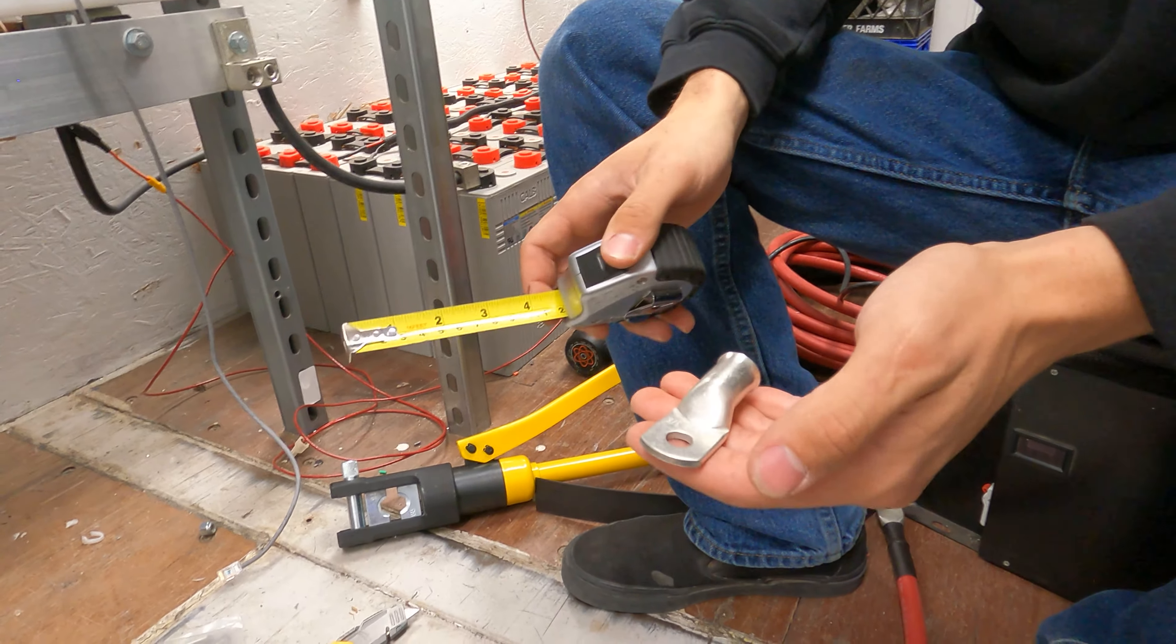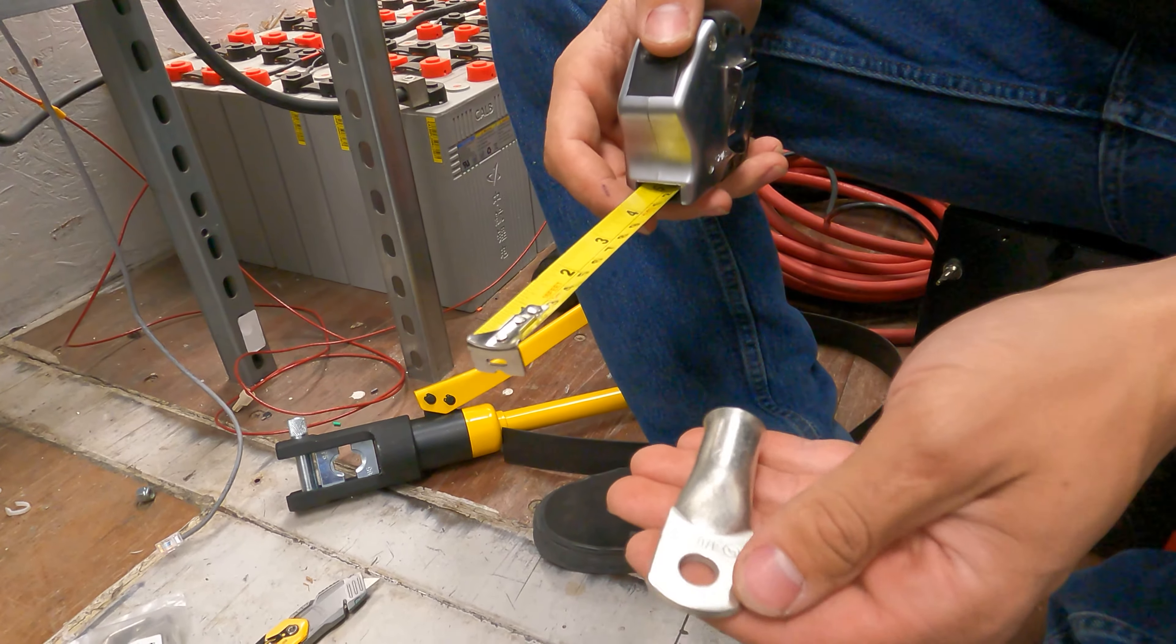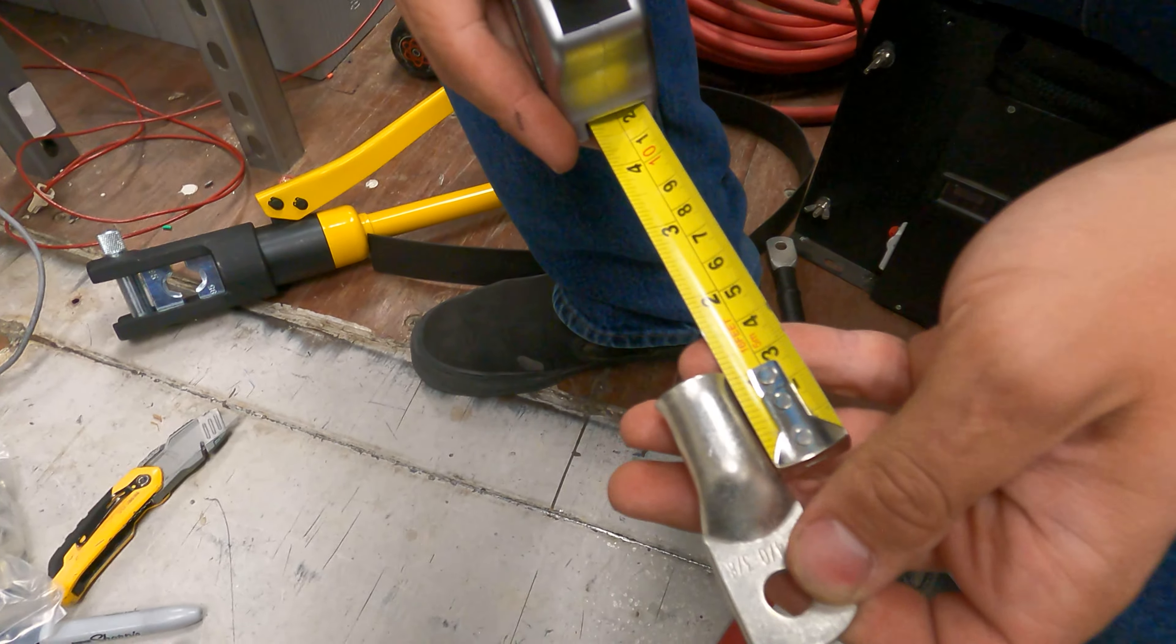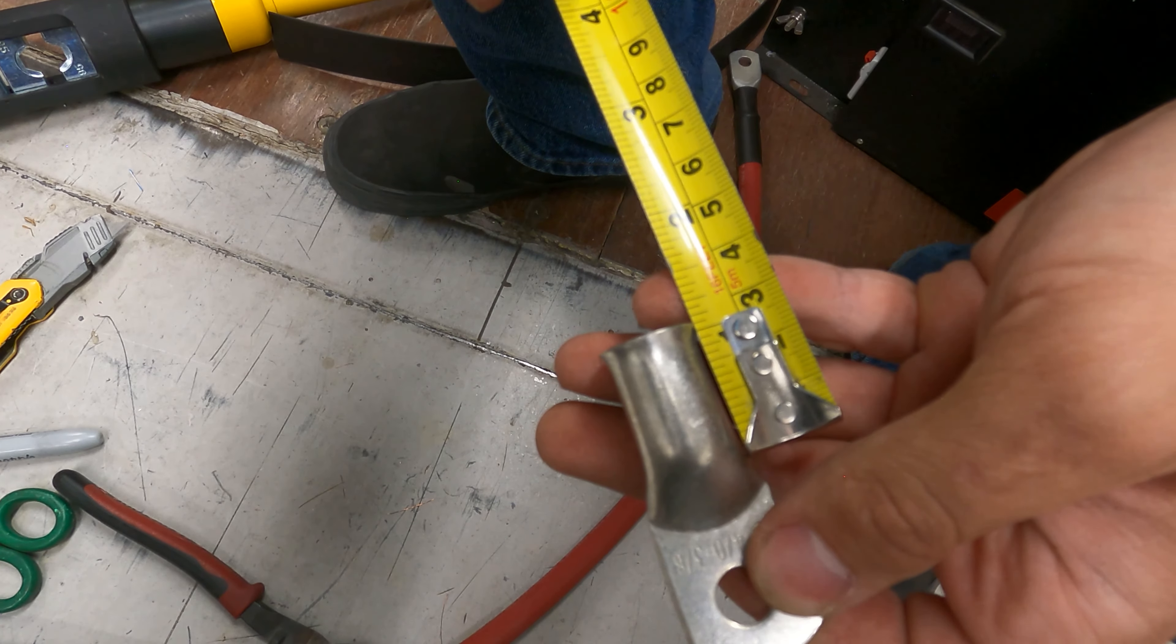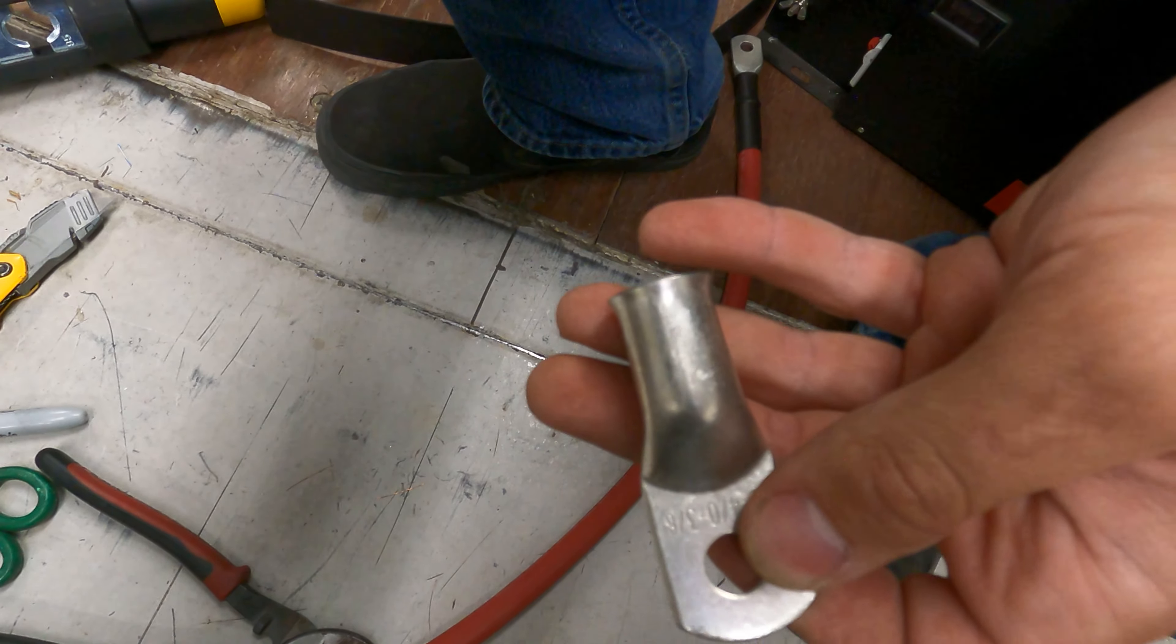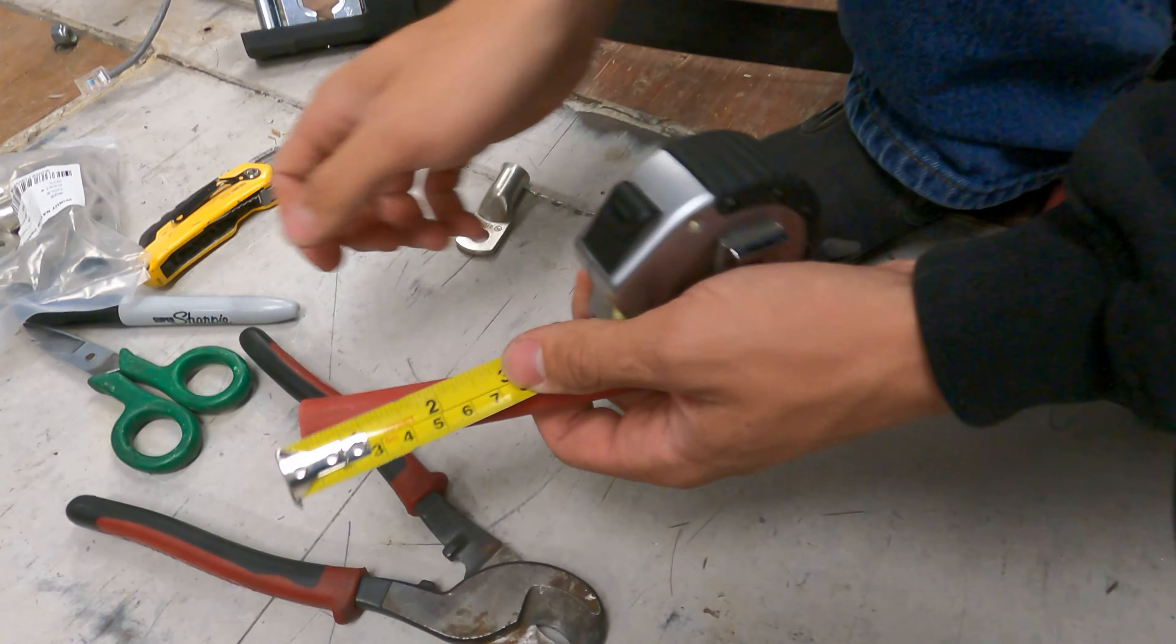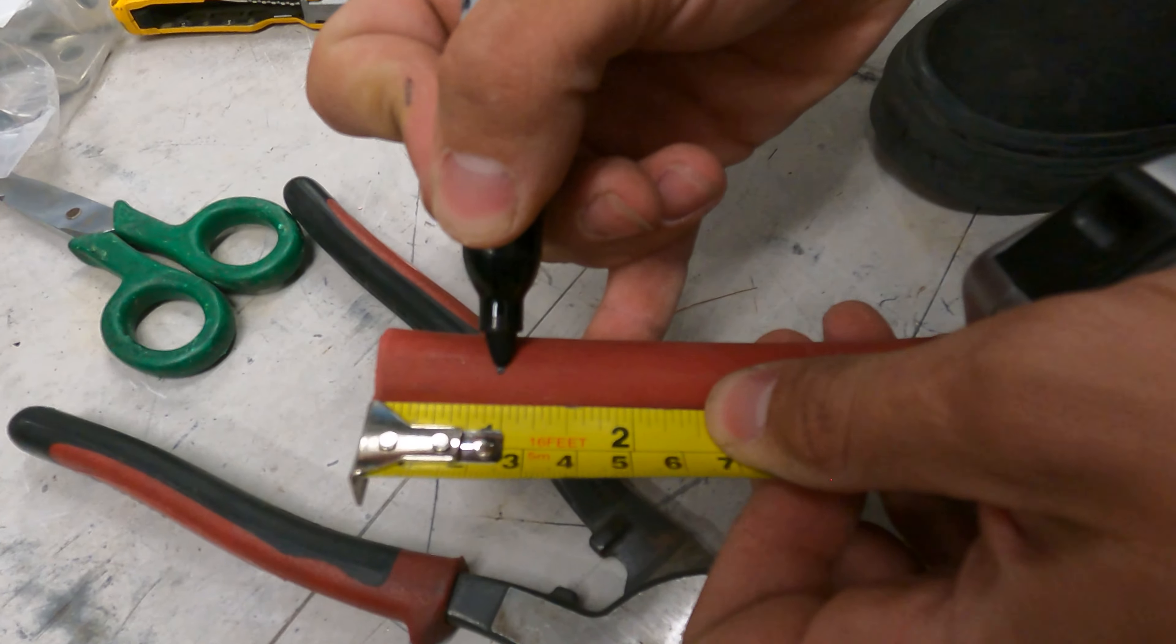Okay, so the first thing we're going to want to do is take our tape measure and measure how far we need to strip back our insulation. In this case, the lug starts tapering down after about one inch of depth, so we're going to strip back one inch of insulation on this wire. I'm going to take my tape measure and my sharpie, and one inch back, I'm going to make a mark.